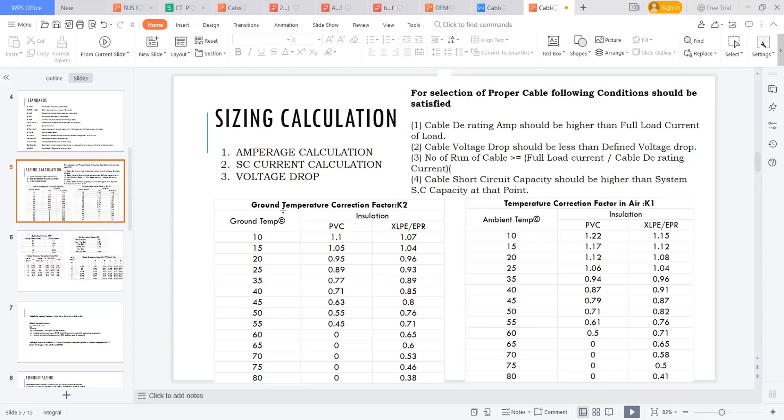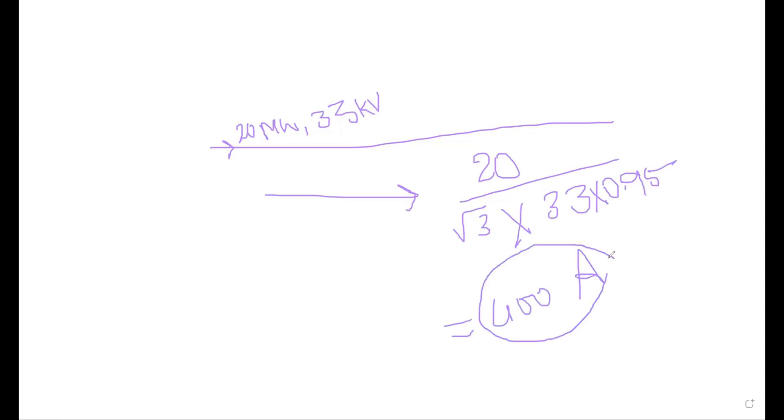Amperage calculation is like this: I am having a 33 kV feeder which is carrying suppose 20 megawatts of power at 33 kV voltage. I want a cable for this, so I am calculating the current, which is 20 megawatts divided by root three into 33 kV, taking the power factor as 0.95. I found 400 amps is the current requirement. So this is my rated current that needs to flow through that cable.